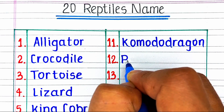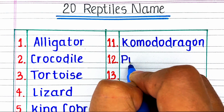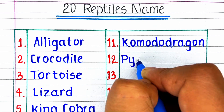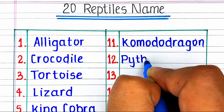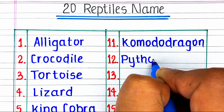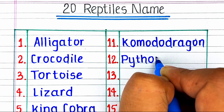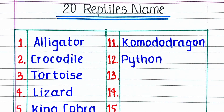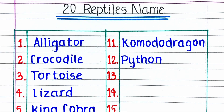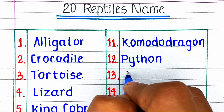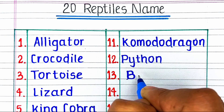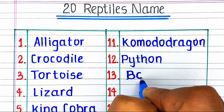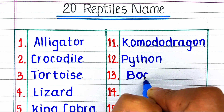Next reptile in our list is P-Y-T-H-O-N, python. Next is B-O-A, boa.